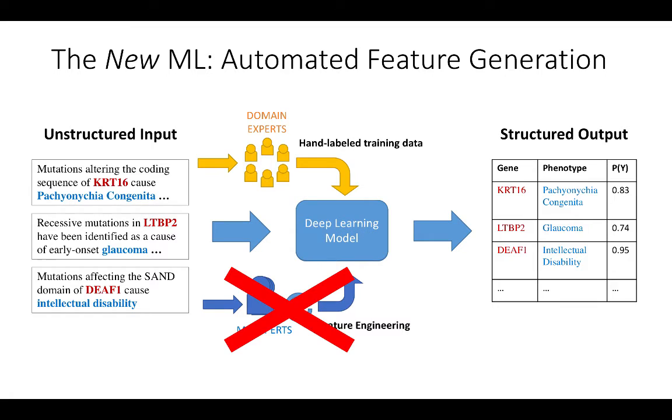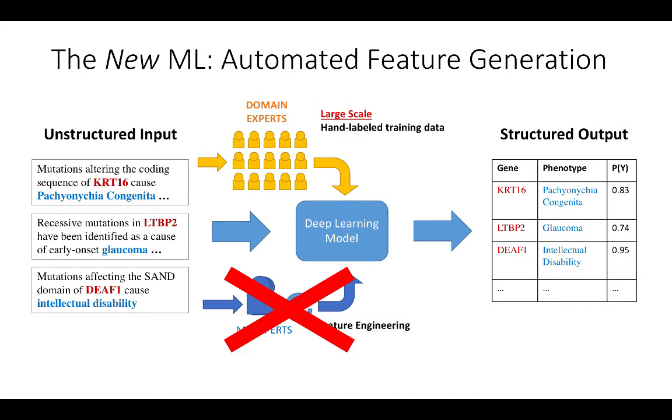Increasingly today, people use approaches like deep learning to obviate the need for this manual feature engineering. However, these methods require even larger training sets than ever before, effectively shifting the pain point.